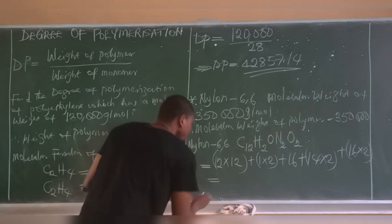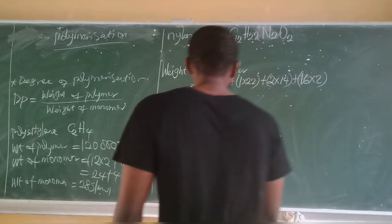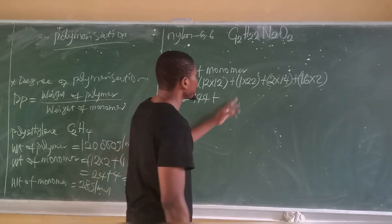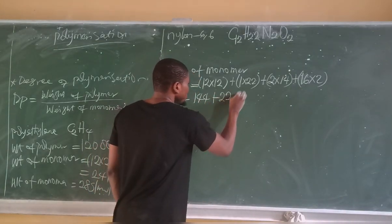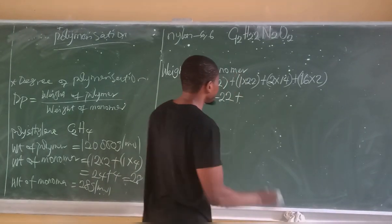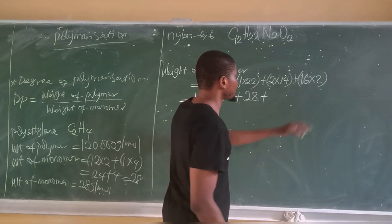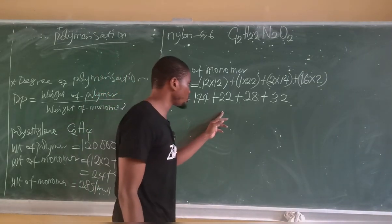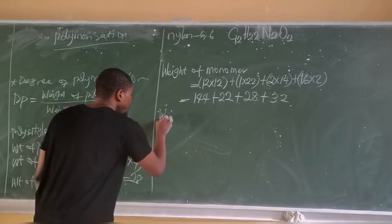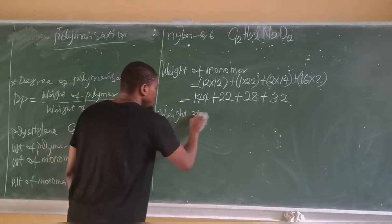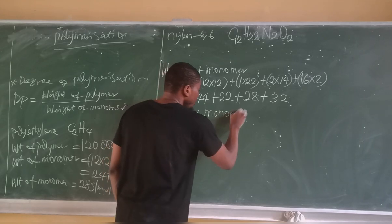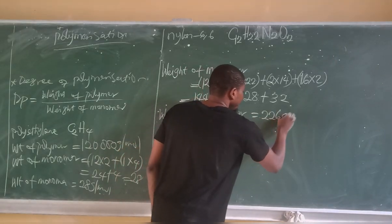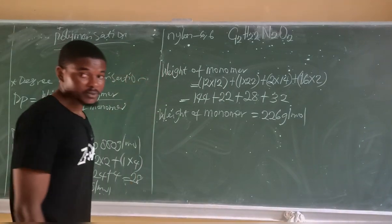Calculating: 12 × 12 = 144; 1 × 22 = 22; 14 × 2 = 28; 16 × 2 = 32. Adding these together: 144 + 22 + 28 + 32 gives us the molecular weight of the monomer, which equals 226 grams per mole.